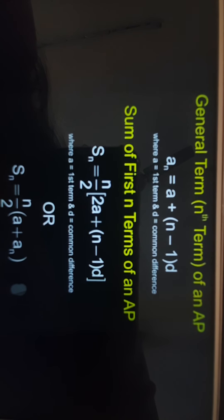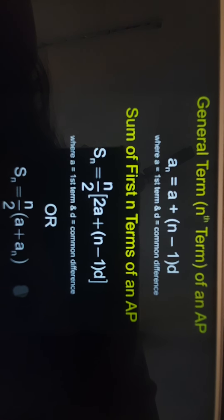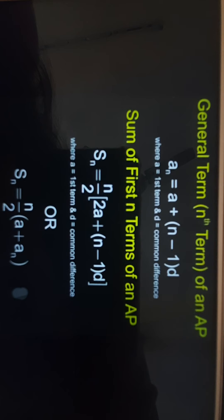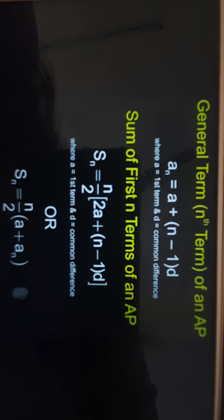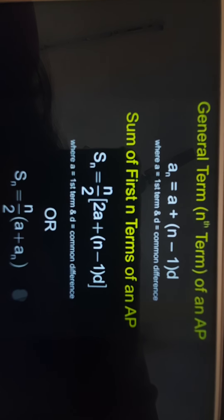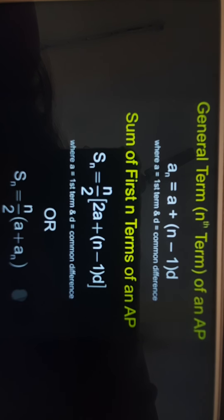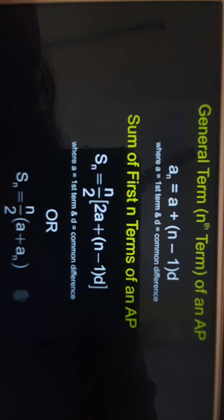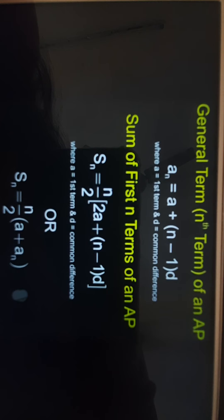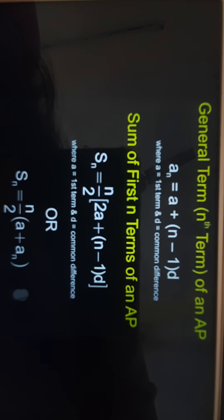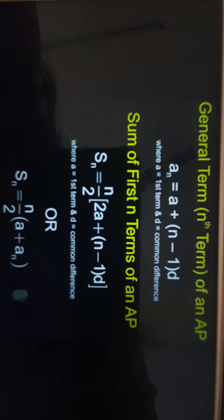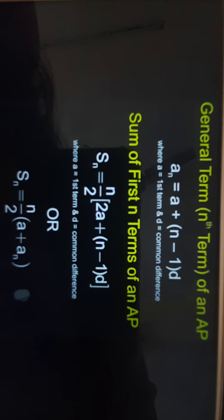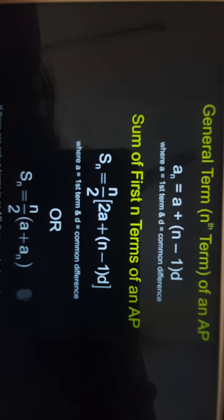So dear students, in this picture you can see, first of all I have written the general term formula, AN is equal to A plus N minus 1 into D. Then sum of first N terms of an AP, that is equal to SN is equal to N by 2 multiplied by 2A plus N minus 1 into D. Or we can write down this formula as SN is equal to N by 2 into A plus AN.